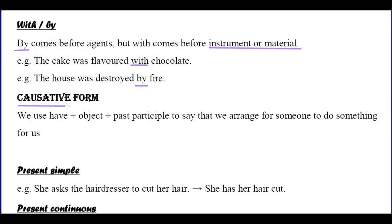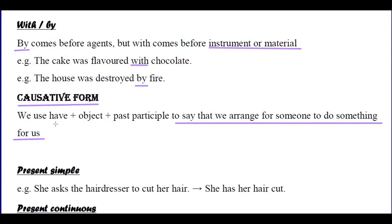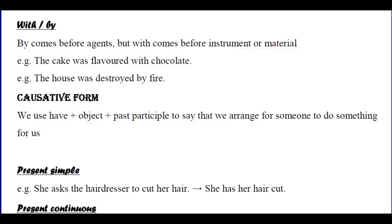Causative form: we use the causative form to say that we arrange for someone else to do something for us. The causative form consists of 'have' plus the object plus the past participle.